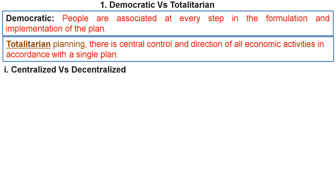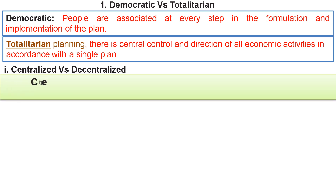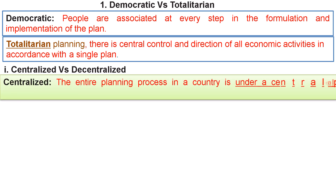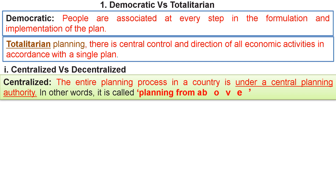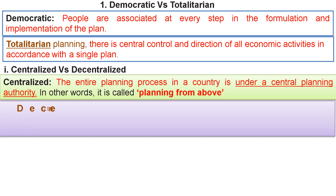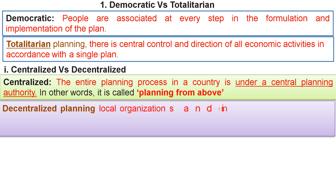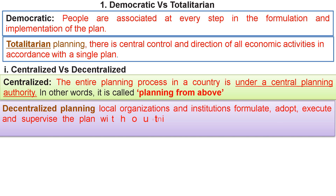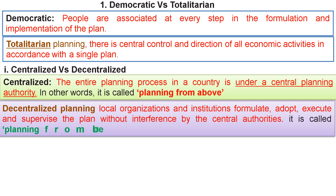Centralized planning: the entire planning process of a country is under a Central Planning Authority — planning from the top down. Decentralized planning: local organizations and institutions formulate, adopt, execute, and supervise the plan without interference by the central authorities.